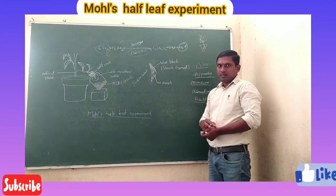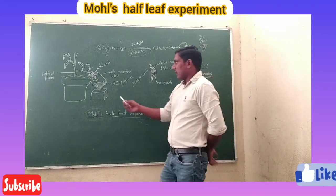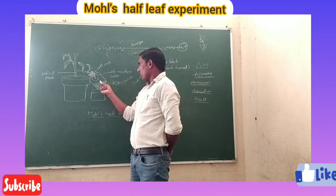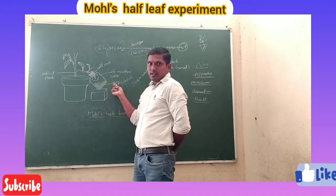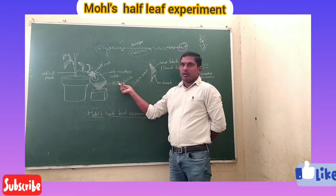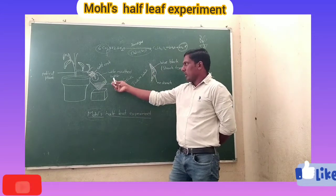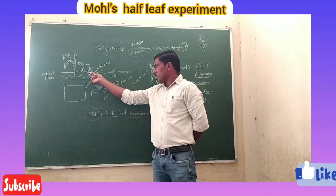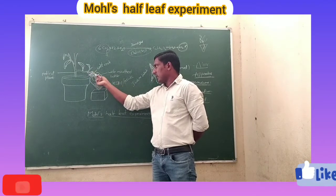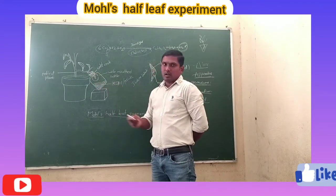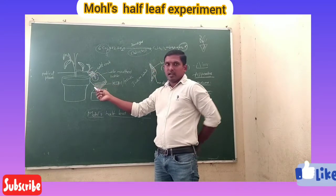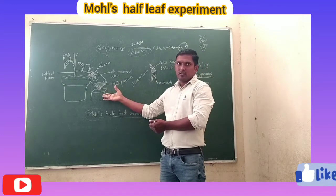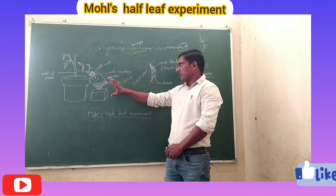We take a wide-mouth bottle. Before placing the plant inside the bottle, we keep the potassium hydroxide solution in it. One leaf of the potted plant is placed inside the bottle, while the other part of the leaf remains outside. Then we close and seal the bottle. This is how we arrange the apparatus.